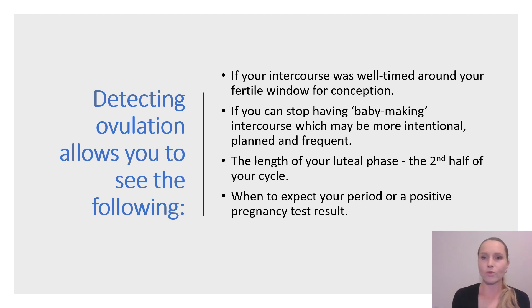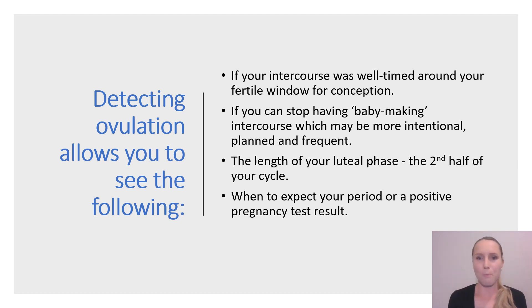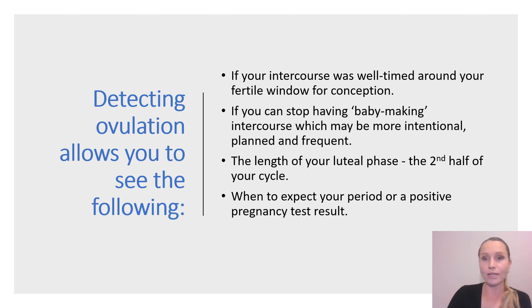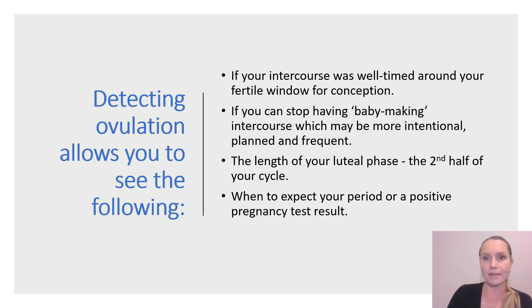Number one, if your intercourse was well-timed around your fertile window for conception, if you can stop having baby-making intercourse, which may be more intentional, planned and frequent, the luteal phase length — that's the second half of your cycle — and when to expect a period or a positive pregnancy test result.